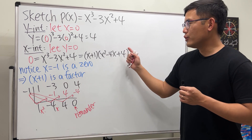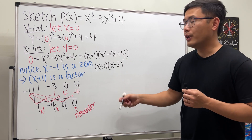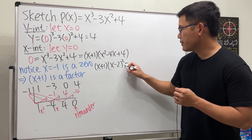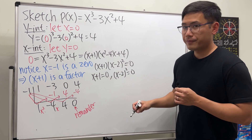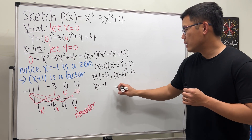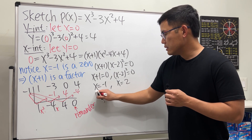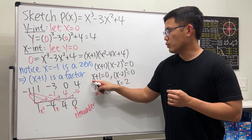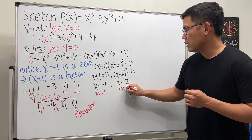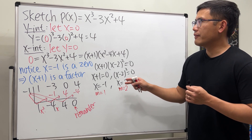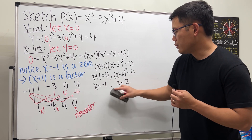We can continue factoring: x² - 4x + 4 = (x - 2)². So the full factorization is (x + 1)(x - 2)². Setting each factor to zero gives x = -1 (multiplicity one) and x = 2 (multiplicity two, since it appears twice). So we have two distinct x-intercepts: -1 and 2.